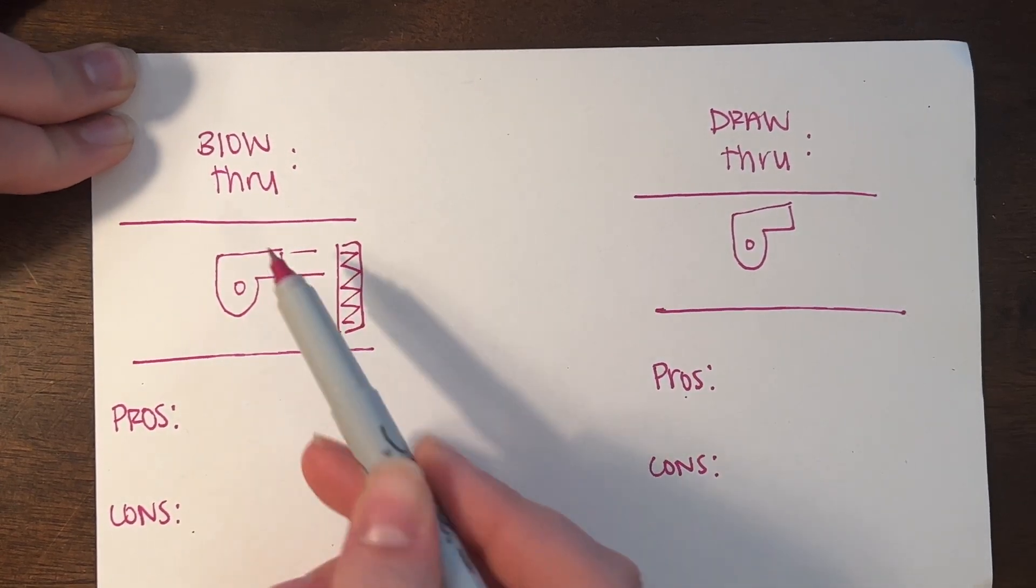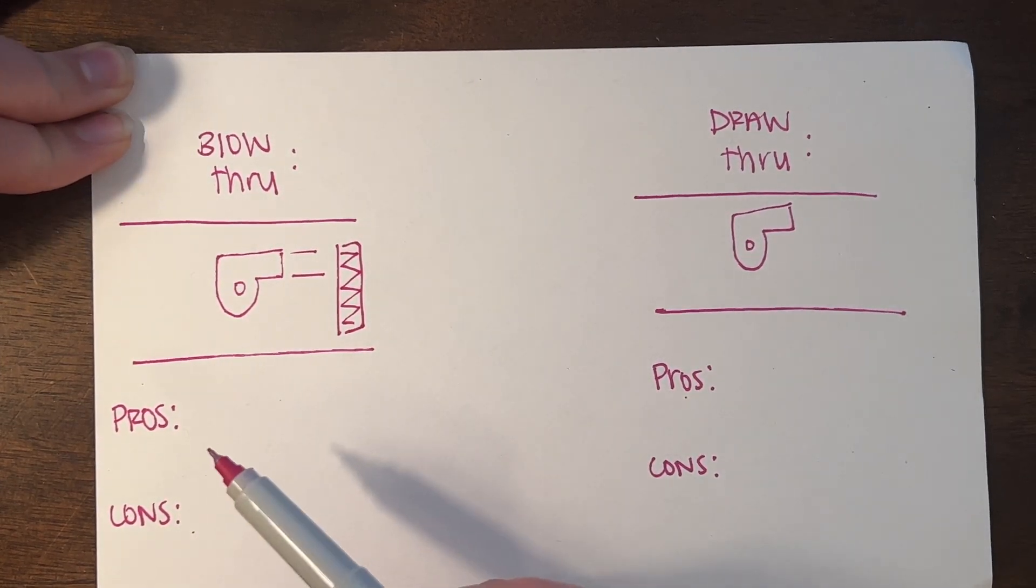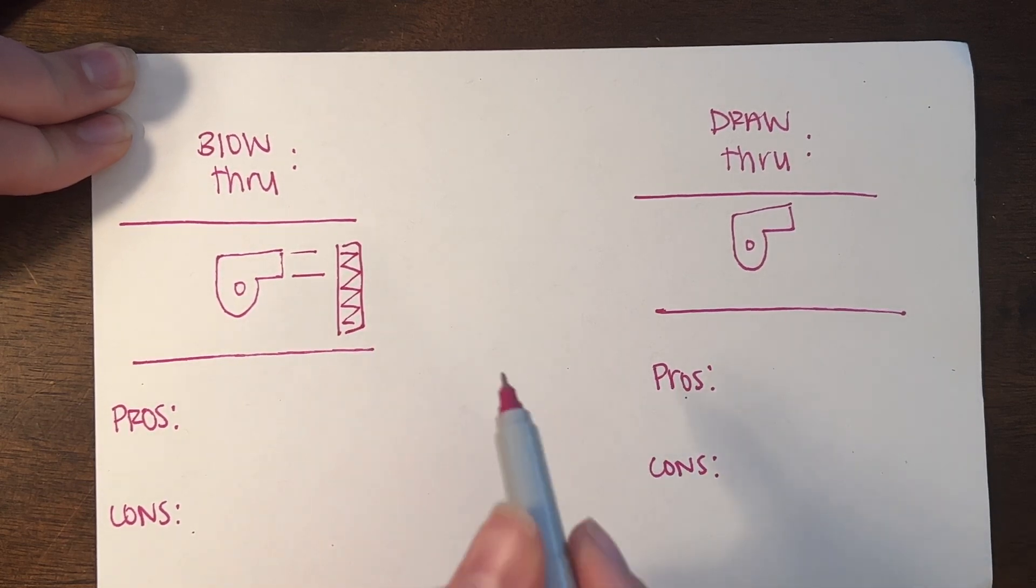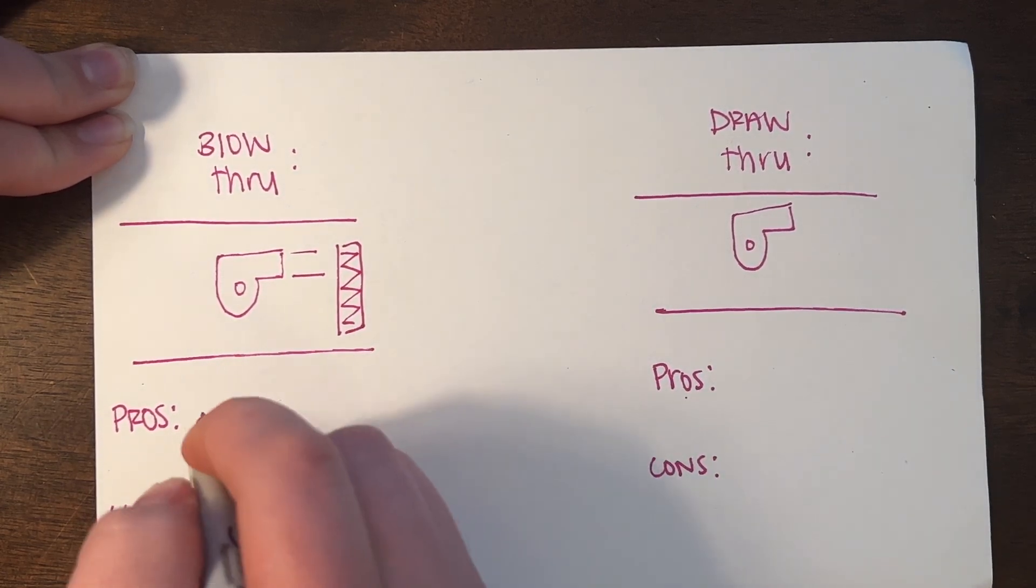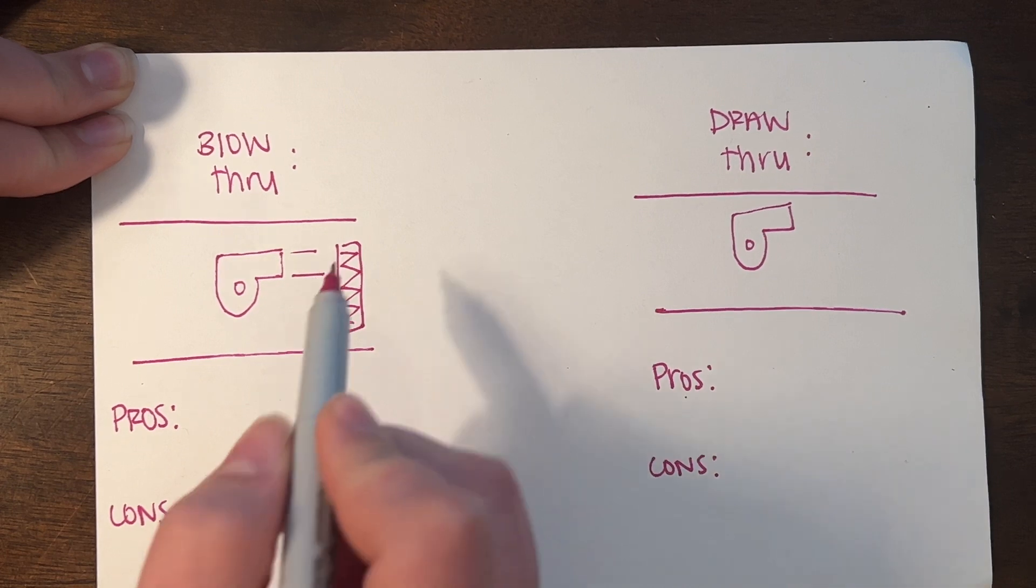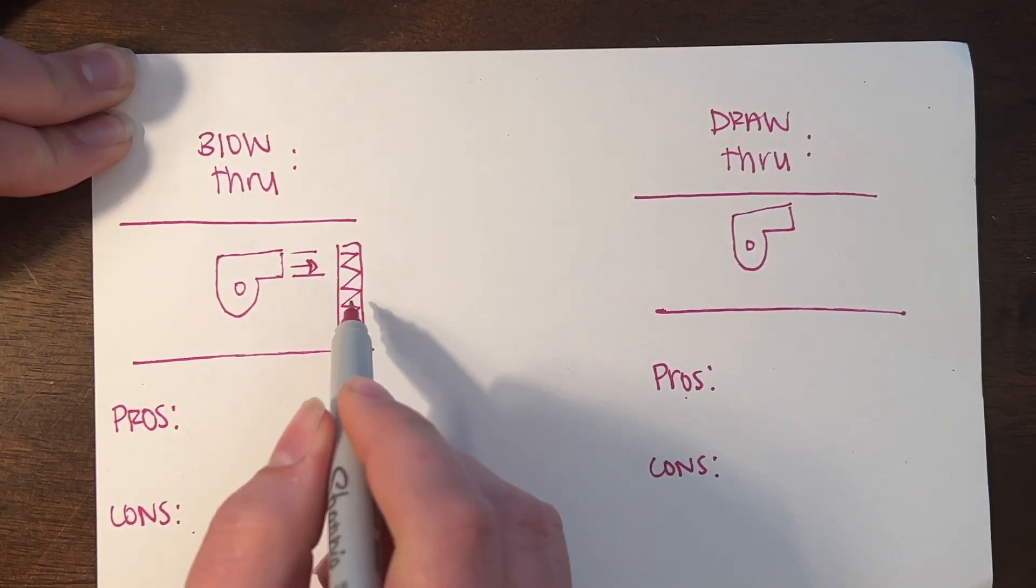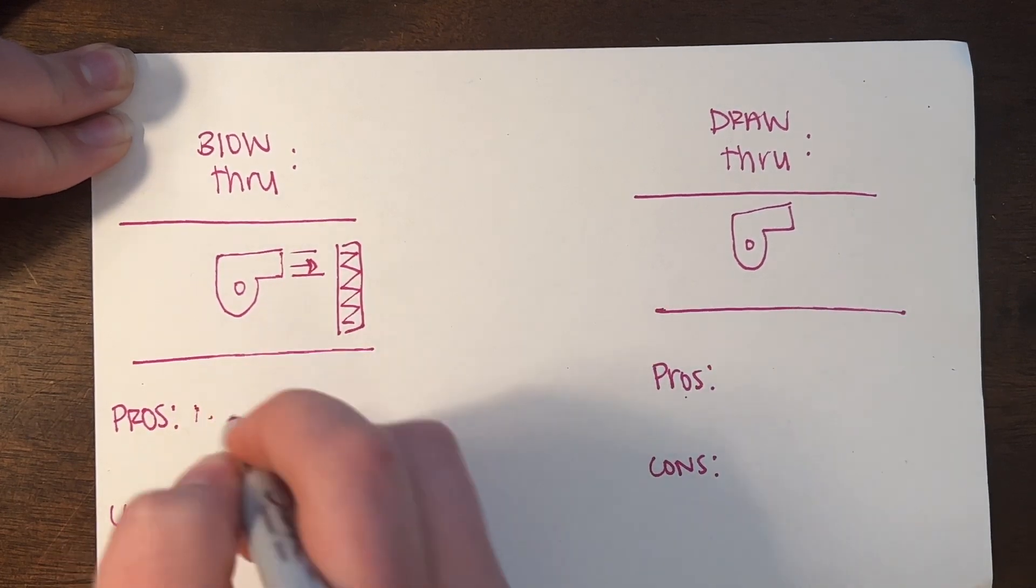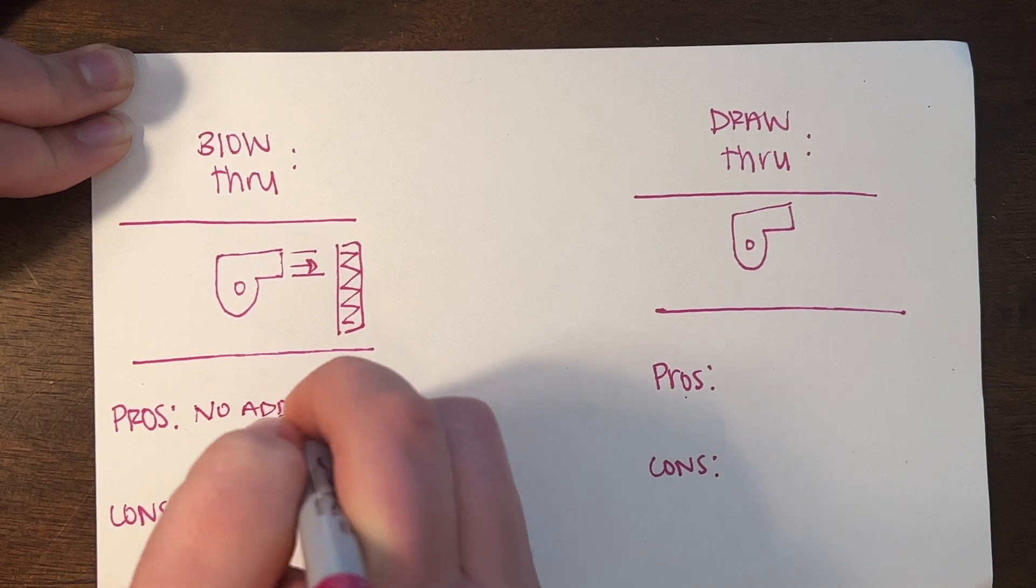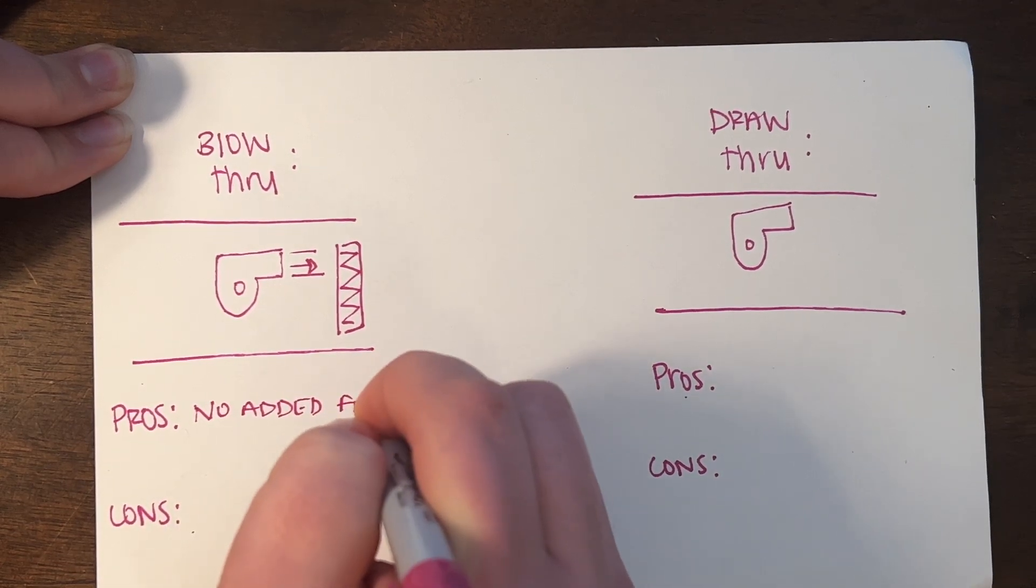You have pros and cons with the blow through unit. The pro with the blow through unit is you don't have to anticipate any additional fan heat after the coil, so no added fan heat is a good pro.